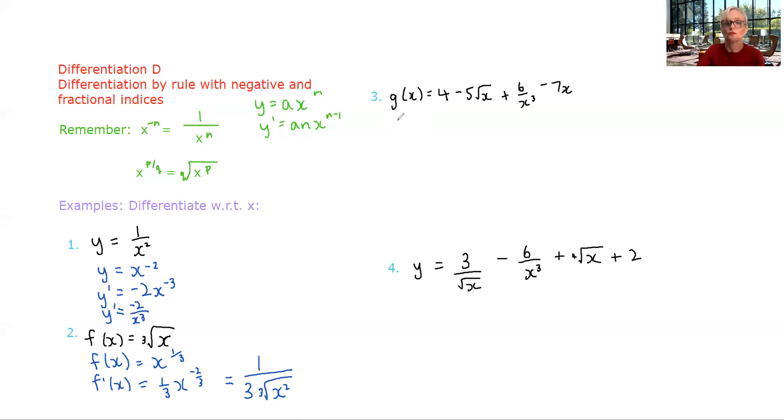First thing we're going to do with g of x here is we're going to adapt it into index notation before we try to differentiate. So five root x means five x to the one half. Six over x cubed means six x to the negative three. And seven x of course is just seven x. Now we can go ahead and do our differentiation. We should remember by now that the derivative of the constant is nothing.